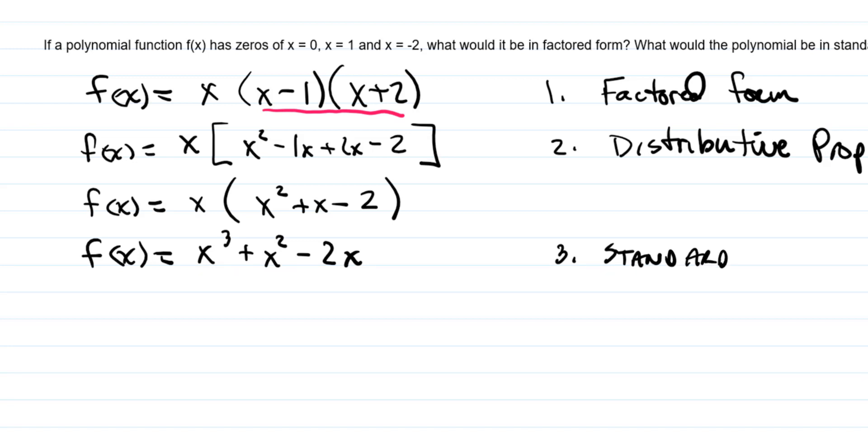And again, remember, standard form written from highest to lowest degree is what standard form is. So that's what I've got there. So my final answer in standard form is just going to be x cubed plus x squared minus two x.